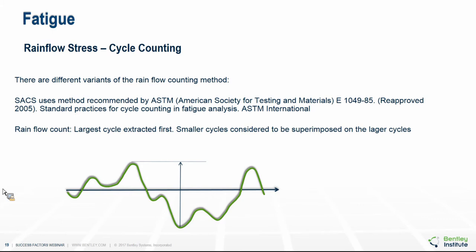Looking at the rainflow stress cycle counting method, there are different variants of this approach. The one used in SACS is recommended by the American Society for Testing and Materials, where the larger cycle is extracted first and the smaller cycles are considered to be superimposed on the larger cycle.